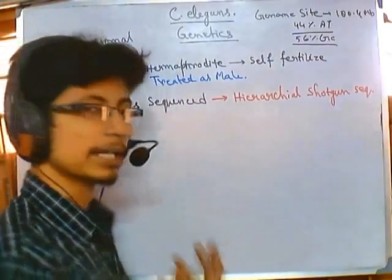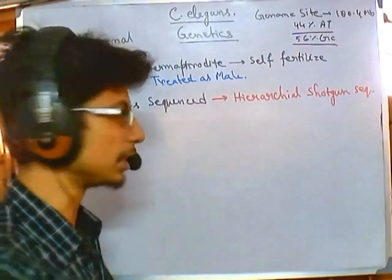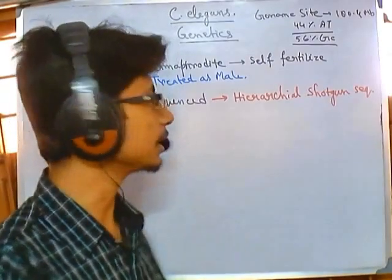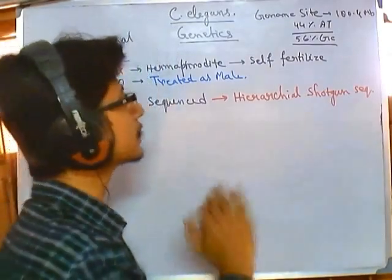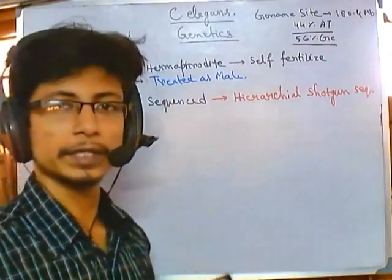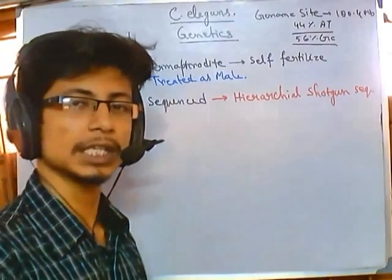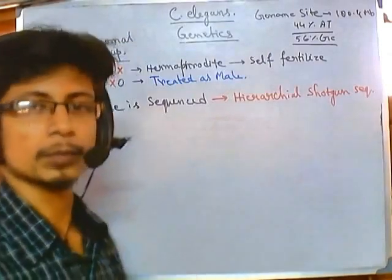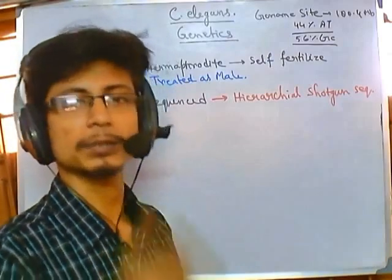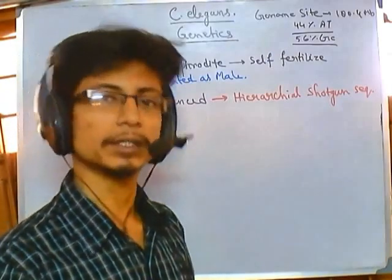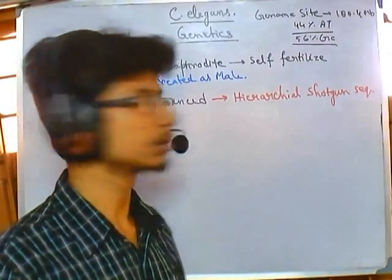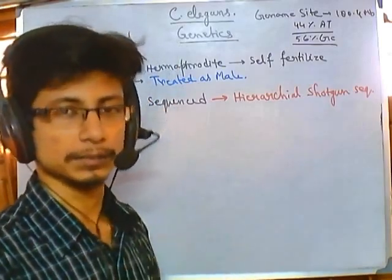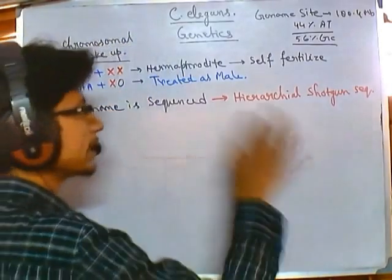Our actual interest is to look at gene expression. The way to study expression nowadays is using microarray. Microarray can tell us the expression of different genes at different time points. You take samples at different developmental time points and look for gene expression using microarray analysis, since we have the whole genome available. We make the genome library and use probes to look for hybridization signals to detect expression.